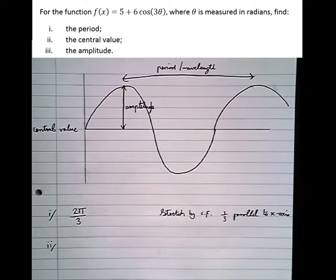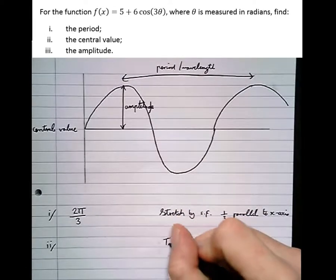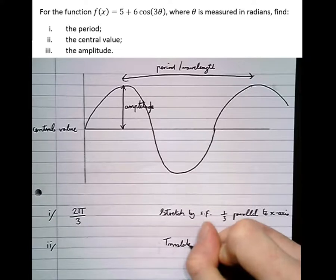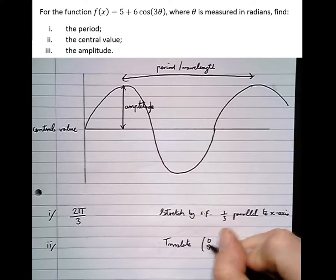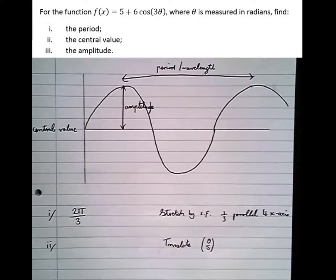Part 2: The central value. Well normally, the central value is at 0 for an ordinary sine or cos graph. But we can see here that the graph has been translated 5 in the y direction. We've translated it (0, 5) by adding that 5 outside of the cos function.